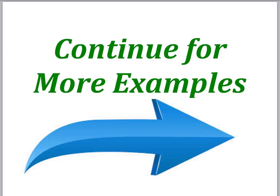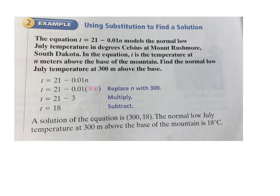Again, just a little plugging in and working it out following your order of operations. I'm going to continue watching for another example from me. Same topic as the last one, this time just with a story problem. The equation T equals 21 minus 0.01n models the normal low July temperature in degrees Celsius at Mount Rushmore. I don't know how they came up with that, but they did.